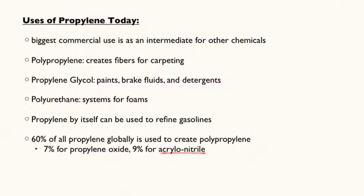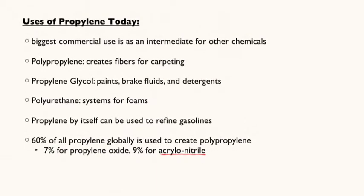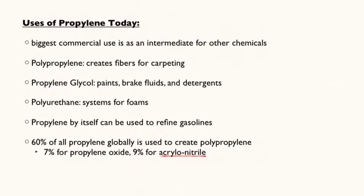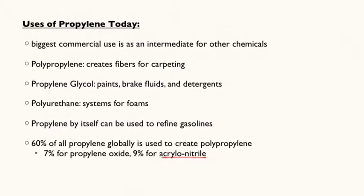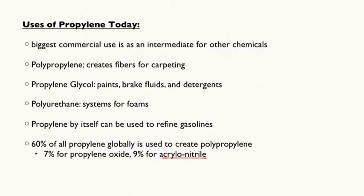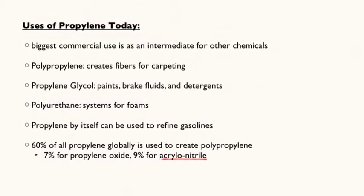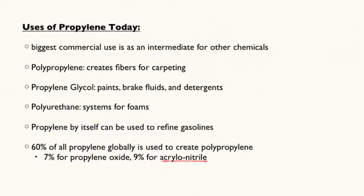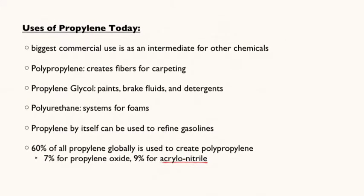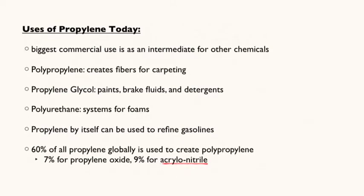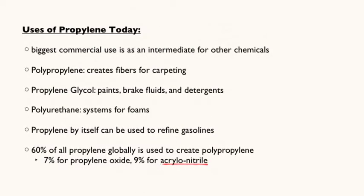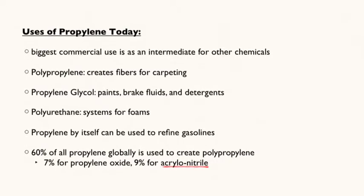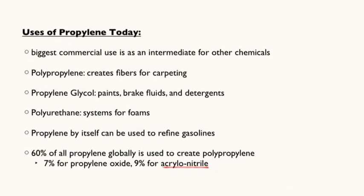The most important use of propylene today is as an intermediate to make other chemicals. One of these chemicals is polypropylene, which creates fibers for carpeting. Another of these chemicals is propylene glycol, which is used in paint, brake fluid, and detergents. Also, it can be used to create polyurethane, which helps to build foams. By itself, propylene can be used to refine gasolines.